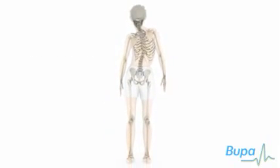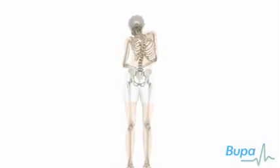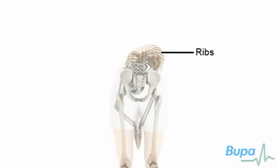To check if you have scoliosis, bend over from the waist with legs and arms straight and the palms of your hands together. If you have scoliosis, your ribs may be more prominent on one side when viewed from the back.